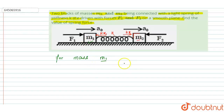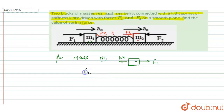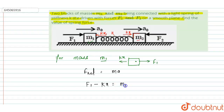Draw the FBD. For mass M1, force F1 is acting in this direction and the spring force Kx is acting in the opposite direction. From Newton's second law, F_net = M·A, so F1 minus Kx equals M1 into A0. This is Equation 1.